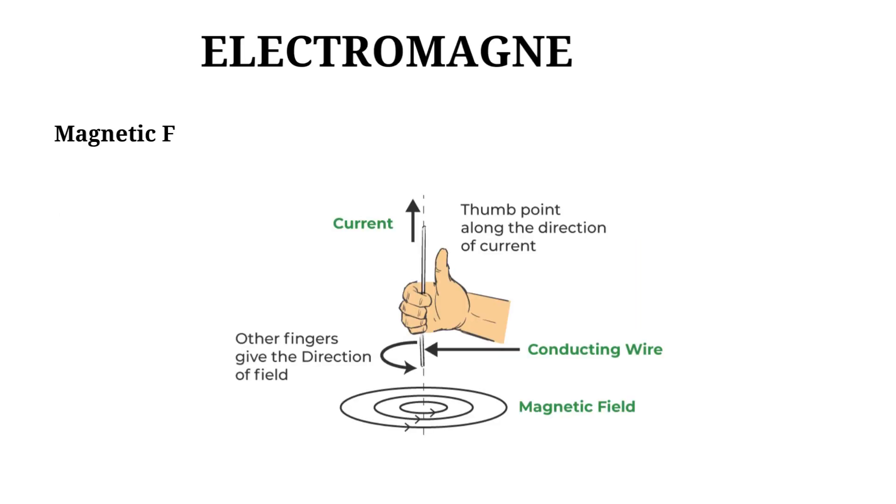Magnetic field pattern due to straight current carrying conductor, the magnetic lines of force round a straight conductor carrying current are concentric circles whose centers lie on the wire. The magnitude of magnetic field produced by a straight current carrying wire is directly proportional to the current passing in the wire. Greater the current in the wire, stronger will be the magnetic field produced.